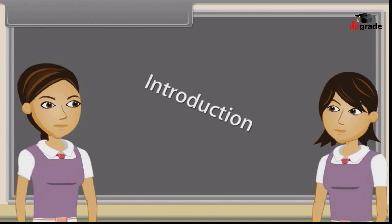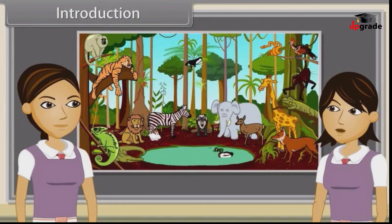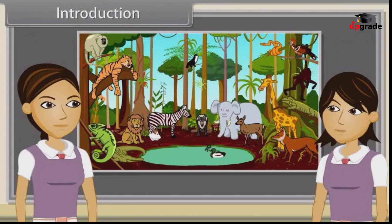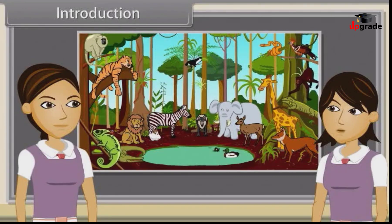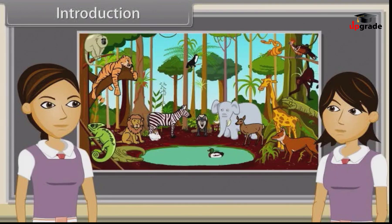Introduction: Sharmila, in our last discussion we studied the definition of animals, types of animals, characteristics of the animal kingdom, various levels of organization, body symmetry, diploblastic and triploblastic organization, coelum, segmentation, notochord, division of animal kingdom, characteristics of invertebrates, characters of porifera, coelenterata and ctenophora.